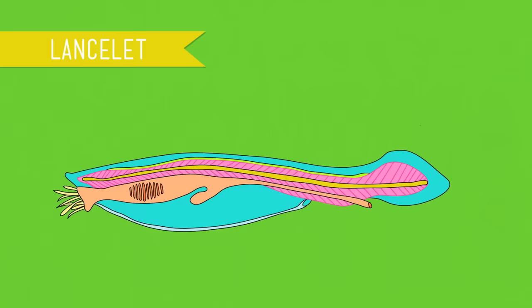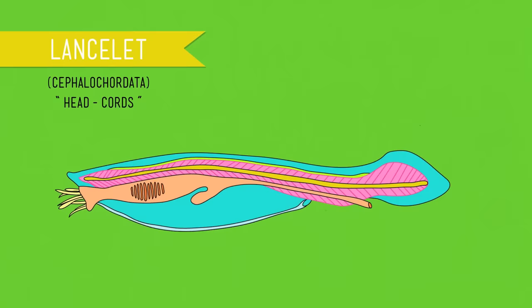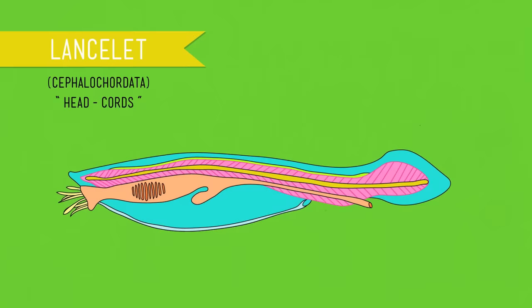The Lancelets, also known as Cephalochordata, literally head chords, are one of the three sub-phyla of Chordates. And unlike almost all other Chordates, these tiny, brainless, invertebrate filter feeders retain all four of these characteristics for their entire lives.